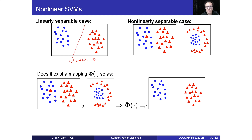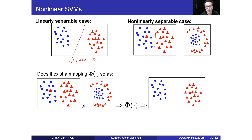Now this is the non-linearly separable case. It means that after we turn it into a hyperdimensional space, we are able to separate the data. Right here, we cannot simply draw a straight line to separate these two cases — this is a non-separable case.